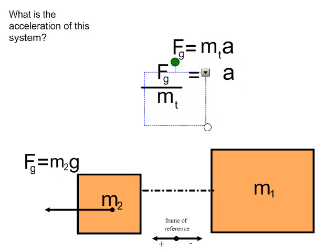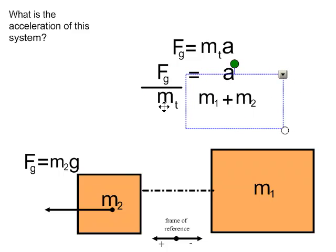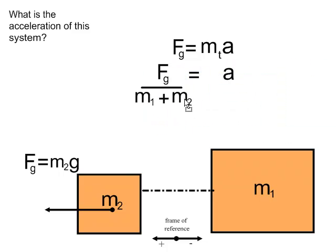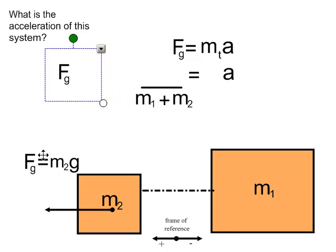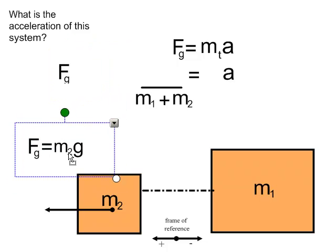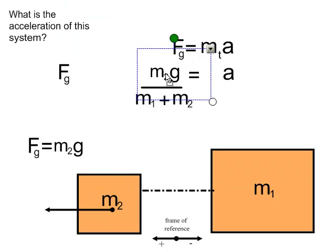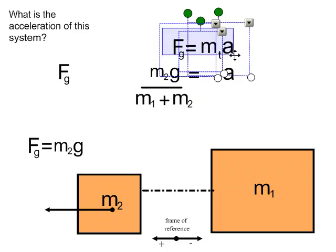Now I also know that the total mass of my system is just equal to mass 1 plus mass 2. So let's substitute that in. I also know that the force of gravity is equal to mass 2 times the acceleration due to gravity, and so I'm going to substitute that into the force of gravity, and now I have a really super nice expression for acceleration.